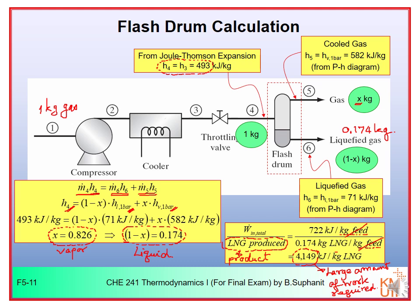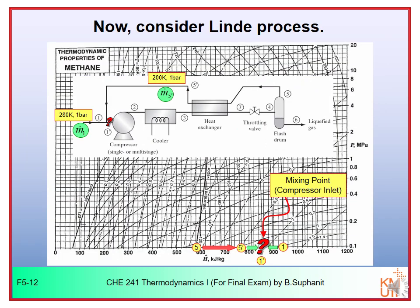Now let's move on to the Linde liquefaction process, which is more efficient. It has a regenerator to exchange heat between cold and hot gas, and the cold gas is recycled back to the compressor. The condition at point 5 prime in this case is 1 bar and 200 Kelvin.